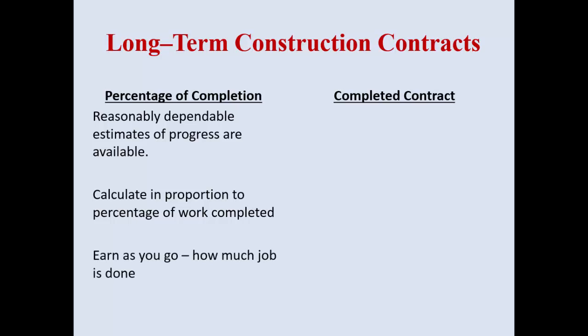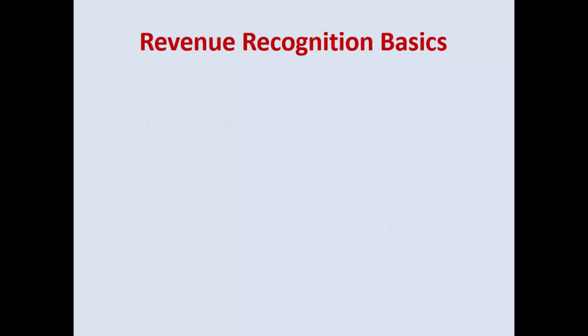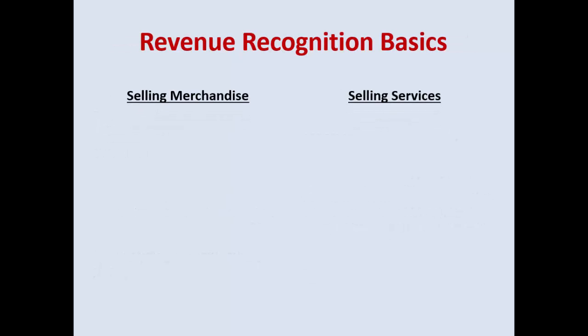Percentage of completion is earn-as-you-go — how much of the work is done. With the completed contract method, that's when dependable estimates are not available. It's not GAAP because it does not follow the matching principle, but because you can't make those estimates you are allowed to use it. It is forbidden under IFRS.